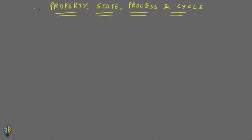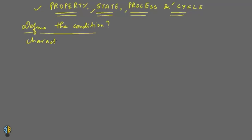Let's talk about the property, state, process, and cycle for a thermodynamic system. If you have to define the condition of a system, what would you need? You need to define certain characteristics of a system — those characteristics which define the condition of a system are like pressure, volume, and temperature.